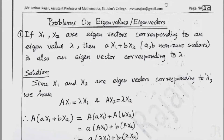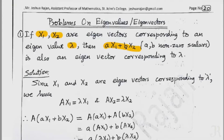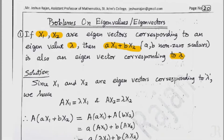Hello friends. In the last few lectures, we discussed the properties of eigenvectors and eigenvalues. Using those properties, we discussed some problems. The first property: if x1 and x2 are eigenvectors corresponding to an eigenvalue lambda, then any linear combination ax1 plus bx2, where a and b are non-zero scalars, is also an eigenvector corresponding to lambda.